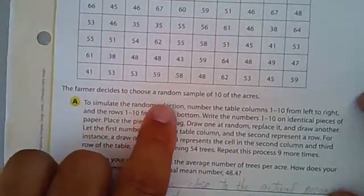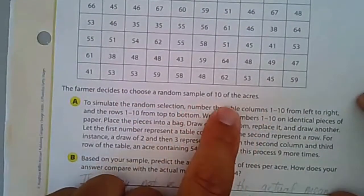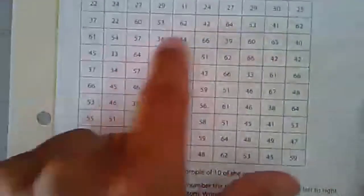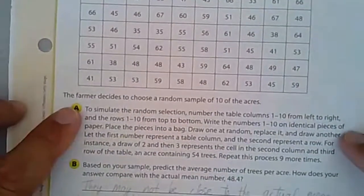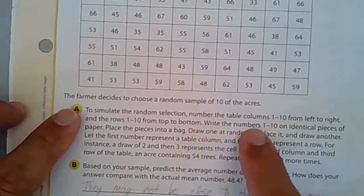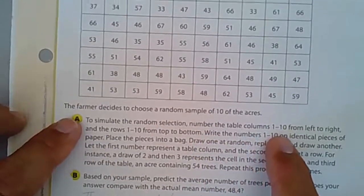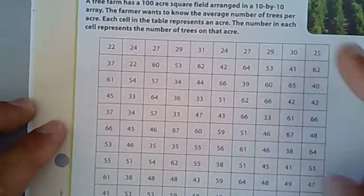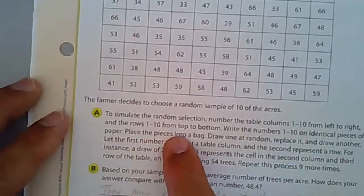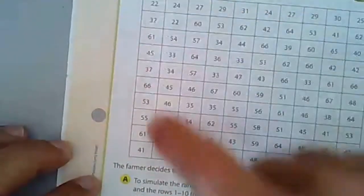The farmer decides to choose a random sample of 10 of the acres, so he's randomly choosing 10 of these. To simulate a random selection, number the table columns 1 through 10 from left to right, so 1 through 10, and then number the rows 1 through 10 from top to bottom.